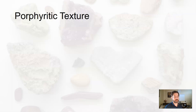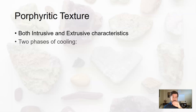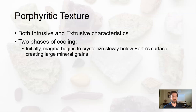We have porphyritic texture. This is kind of an interesting one because a porphyritic igneous rock is considered both intrusive and extrusive — it has both characteristics. The reason is that it has two phases of cooling. Initially, the molten rock magma begins to cool below ground, creating bigger crystal grains, bigger mineral grains.